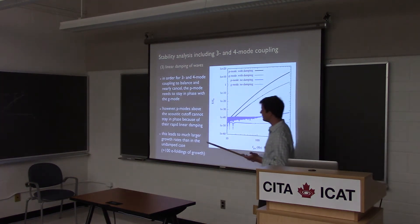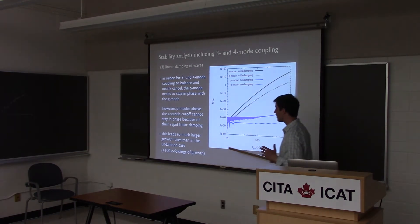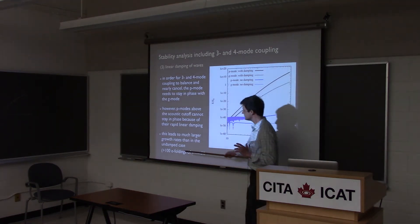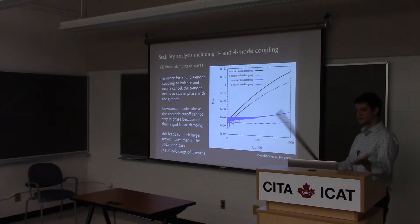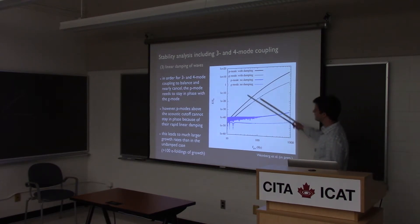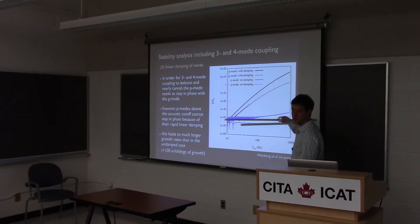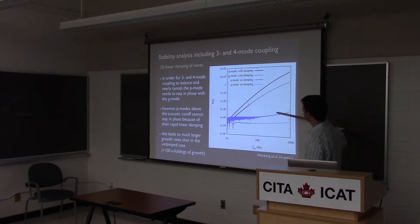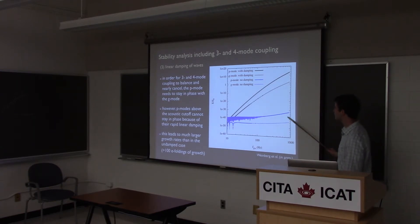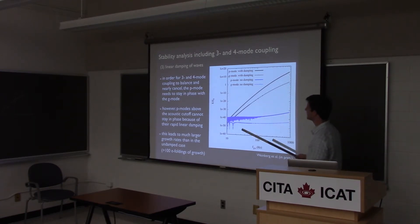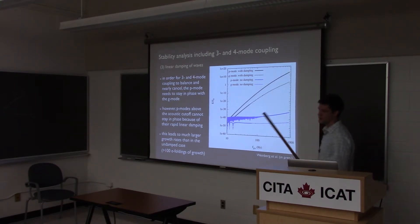With this large P-mode damping included, the growth rates are factors of 10 or more higher than in the undamped case, yielding more than 100 e-foldings of growth between instability onset and merger. A plot shows that without damping (blue curve) there is only small growth, while with damping (black curve) the P-mode and G-mode energies grow by 50 or more orders of magnitude — though nonlinear saturation will occur before the binding energy scale is reached.